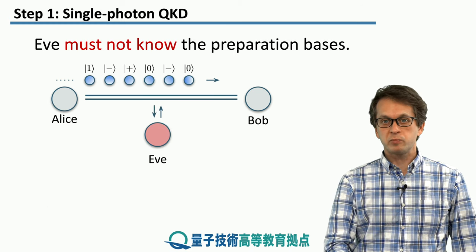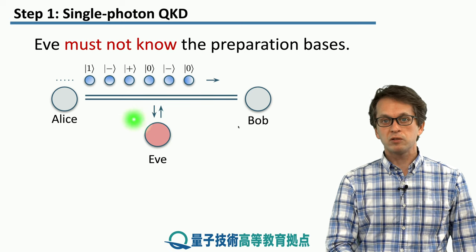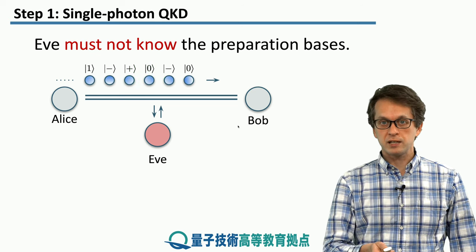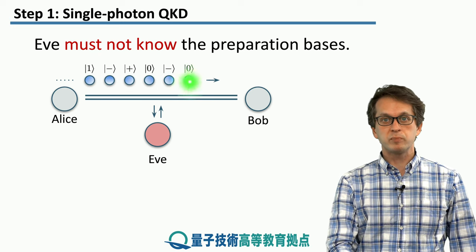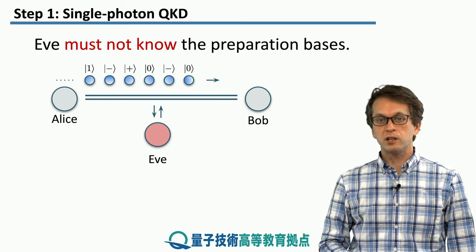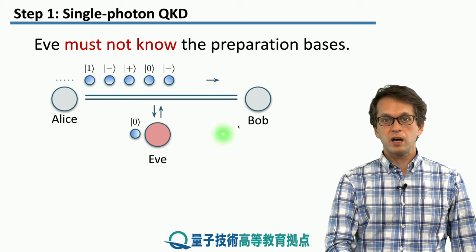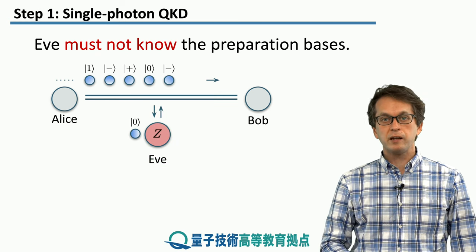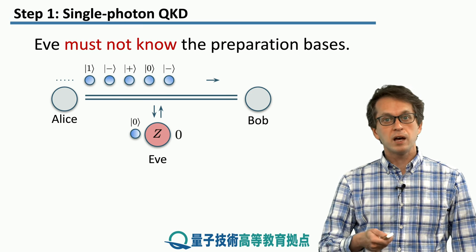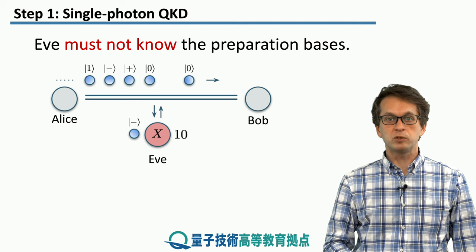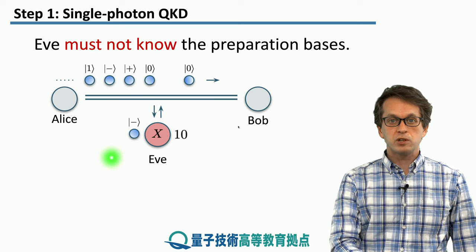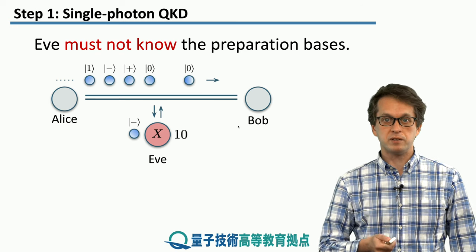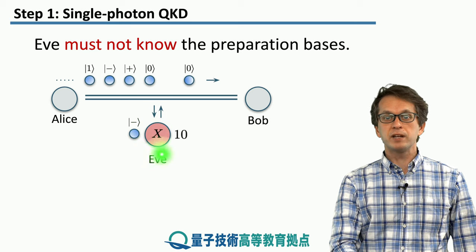Now, imagine that there's an eavesdropper Eve, and we set that she cannot know the preparation basis — we will demonstrate why. Consider the case that she does have information about the basis in which Alice prepared the original qubits. What she can do is she intercepts the first qubit, and she knows that this qubit was prepared in the Z basis. Therefore, she measures it in the Z basis and obtains the corresponding classical bit, which in this case is 0. Then she resends the photon back to Bob. She intercepts the second qubit, and again, because she knows the information about Alice's preparation basis, she measures in the appropriate basis, which in this case is the X basis. And because the state is minus, she obtains a classical bit 1.